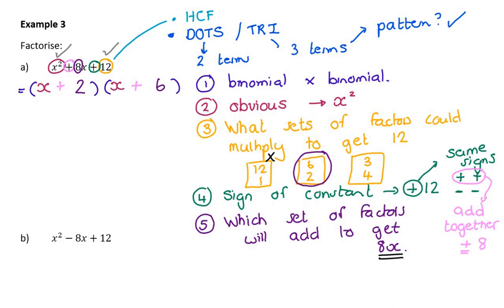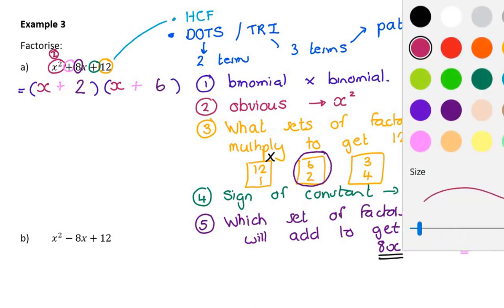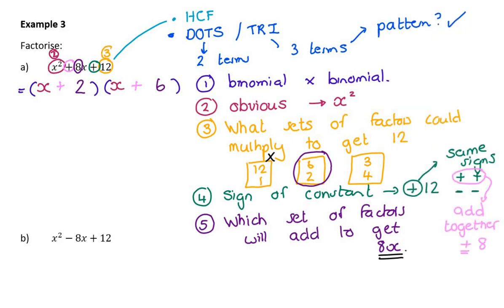You'll see the first couple of examples take forever, but eventually you become really fast at factorizing trinomials. I've specifically kept the constant as 12 to explore all the different varieties. For this next example: no highest common factor; it's a binomial times a binomial; x times x gives x squared; factors of 12 are 12 and 1, 6 and 2, or 3 and 4. My signs have to be the same because the constant is positive 12, and because the middle term is negative 8x, both signs must be minus — so it's minus 6 and minus 2.